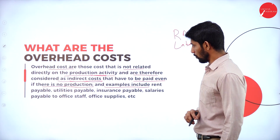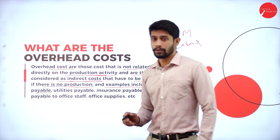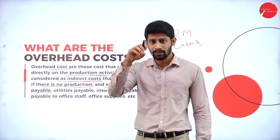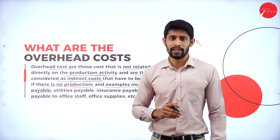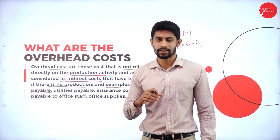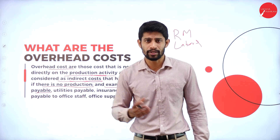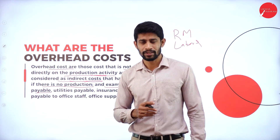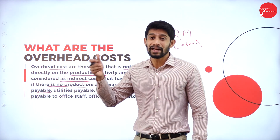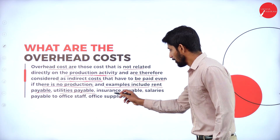Examples for overheads include rent payable. If you are running a factory in a rented building, you are supposed to pay the rent whether you are producing the product or not. For example, for eight months you produced a product, for the next four months there is no production, but still you have to pay rent. That is called indirect cost. Next, utilities payable and insurance payable.